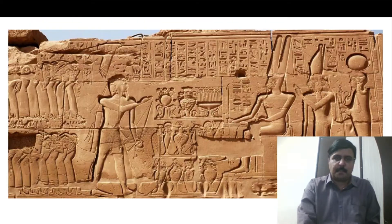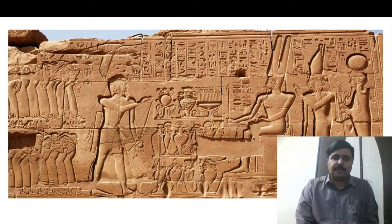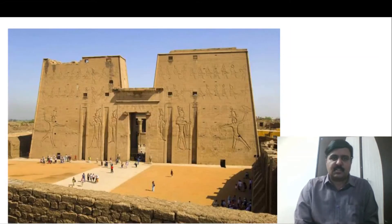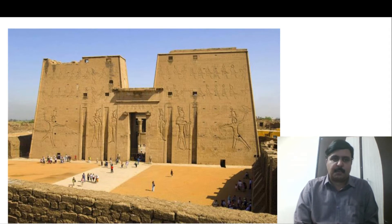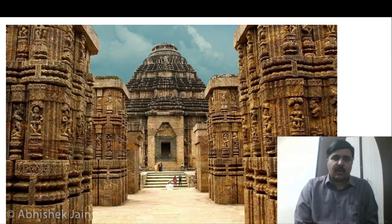The Theban Triad is worshipped in Egyptian mythology, and for them there is the Temple of Karnak. You are seeing the visuals of the Temple of Karnak, where the worshipping of the Theban Triad — Amun, Mut, and Khonsu — takes place. Now I will present you the resemblance of this Karnak Temple and this Theban Triad with Hinduism.